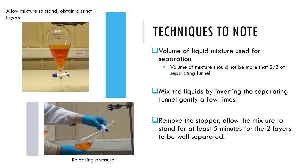The two liquids are mixed by inverting the separating funnel gently a few times. Invert the funnel to release the pressure built up in the separating funnel by opening the tap. Lastly, remove the stopper and allow the mixture to stand until the two liquid layers are well separated.